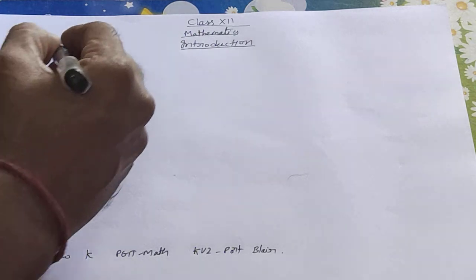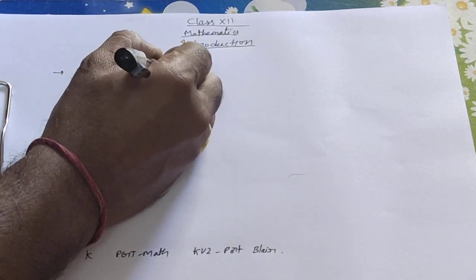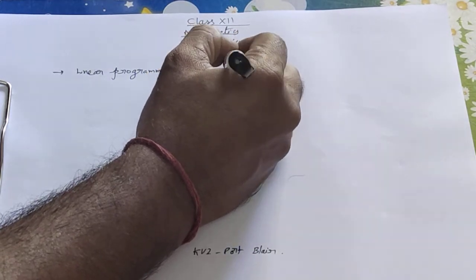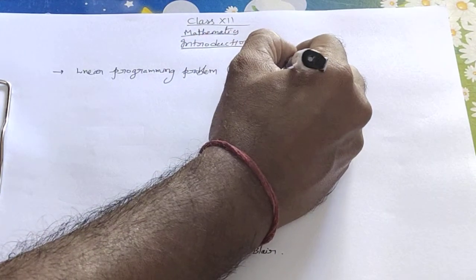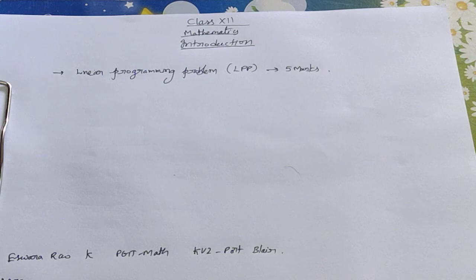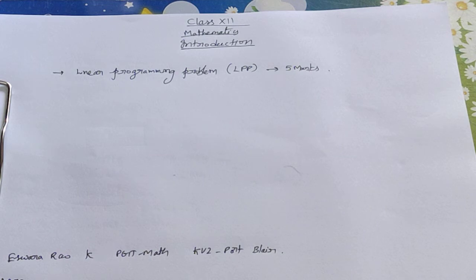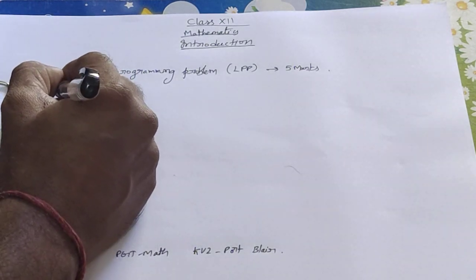Next is Linear Programming Problem, shortly called LPP. The weightage of this topic is 5 marks — there will be a 4-marker and a 1-marker question from it. LPP is a continuation of the linear equations topic from 11th standard. Problems come in the form of word problems, which you convert into equations and find the solution. It is an easy topic where everyone can score marks.